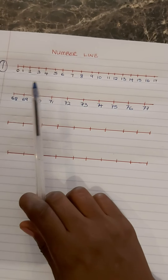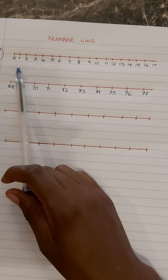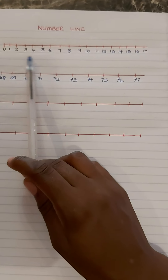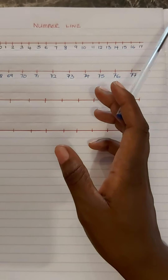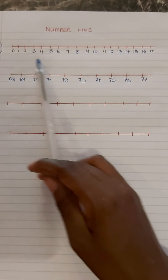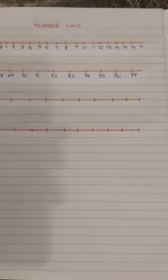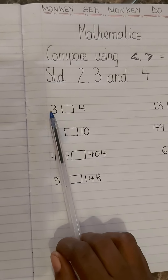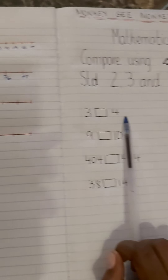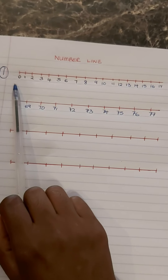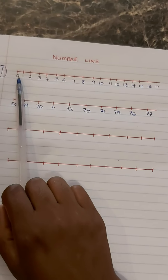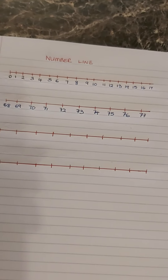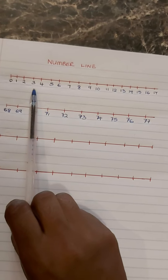So for beginners, when you introduce this lesson, start with the number line. Show the child the number line. The number line helps because the numbers are arranged in order — from zero and upward. So it will be simple for the child to identify the smaller number and the bigger number because the numbers are arranged orderly. When you introduce this lesson, say to the child: 'Tell me which number is bigger between three and four.' You are going to show the child the number line and count together first — zero, one, two, three.